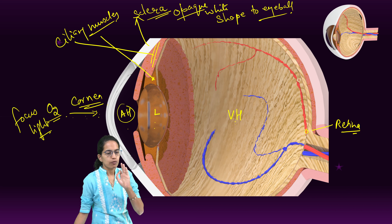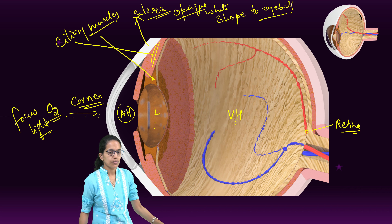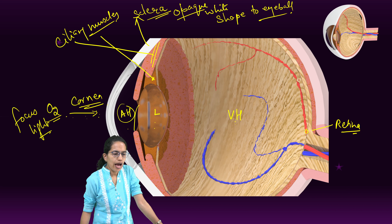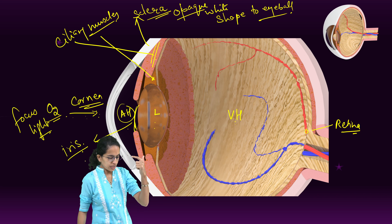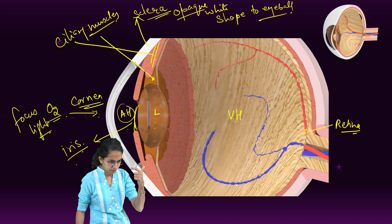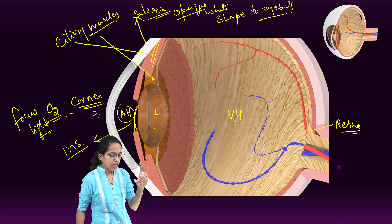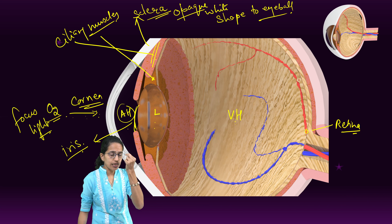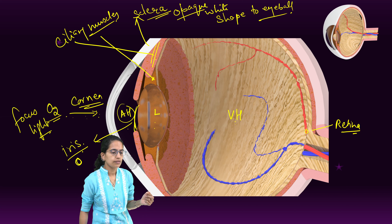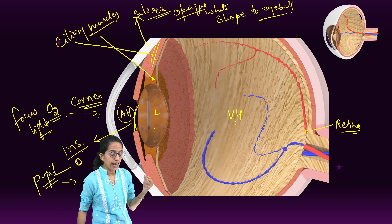Then we have the cornea. Cornea is the transparent layer — it is the clear layer. It absorbs oxygen and it also focuses the light which falls onto it. On the top here are the ciliary muscles. Now the ciliary muscles help in holding the lens. Contraction of the ciliary muscles takes place and this function of the ciliary muscle is extremely important.